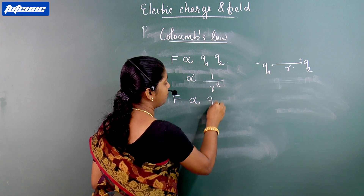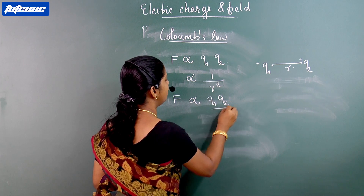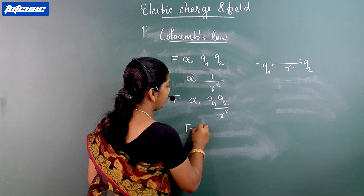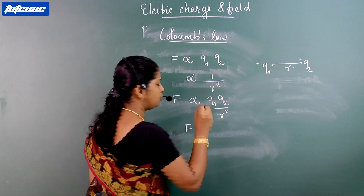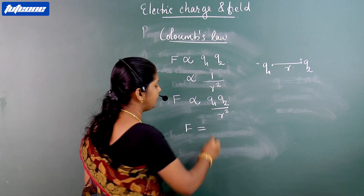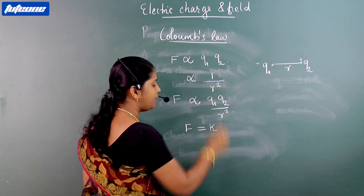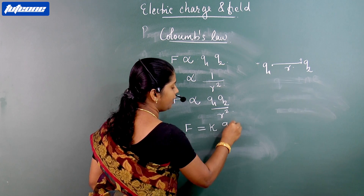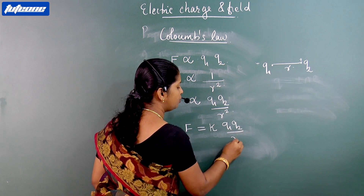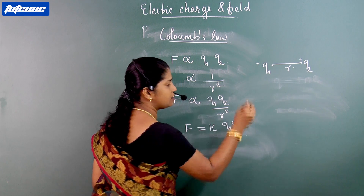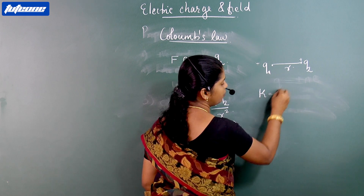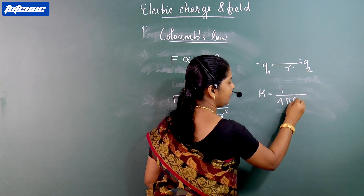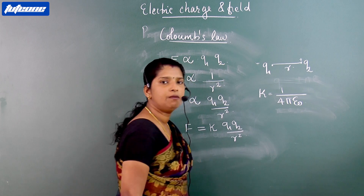we get F proportional to Q1·Q2 / R². F is equal to K·Q1·Q2 / R², where there is a proportionality constant K, which is equal to 1 / (4π·ε₀).